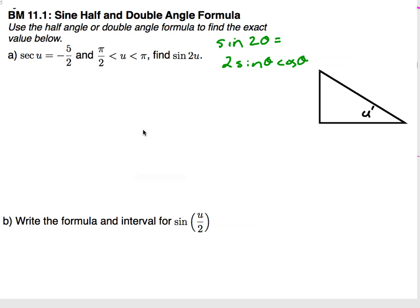This benchmark is two parts. One is going to ask us to actually evaluate the sine of either a double angle or half angle, and the second part will just ask us to write the formula of the other one. Here I have the formula for a double angle, which is what we are going to try to find, the sine of 2u.